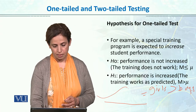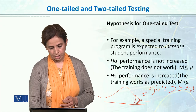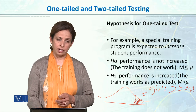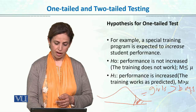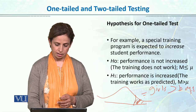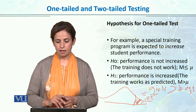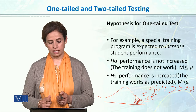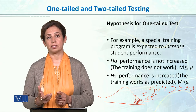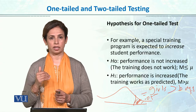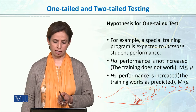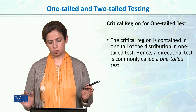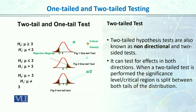I am saying that one group will be greater than the other group, so my critical region is 5%, and that comes on one side, which is the rejection region. For example, performance is not increased, or performance is increased. When the direction is clear-cut, we use one-tail or two-tail accordingly. If it is two-tail, the critical region is split; if it is one-tail, it is on one side.